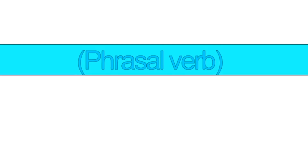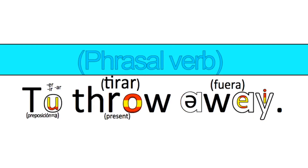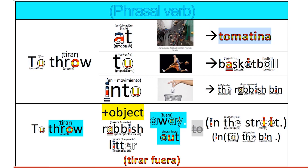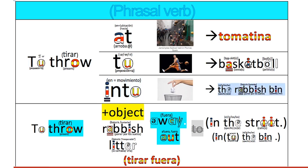A verb worth using with rubbish is to throw away. The verb throw generally goes with three different prepositions. If you're throwing something at someone, it's like tomatina. If you're throwing something to someone, you want them to catch it, like basketball. And if you're throwing something into a space, that's the example we use for rubbish — we're throwing rubbish into the bin.